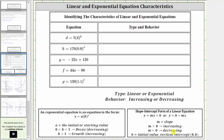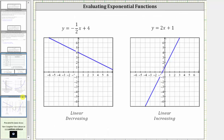Let's take a look at two linear equations. For this first linear equation, the slope m is less than zero or negative. Notice how the graph goes downhill from left to right, which is why the behavior is decreasing. And for the second linear equation, the slope is positive or greater than zero, and the line goes uphill from left to right, which is why the behavior is increasing.